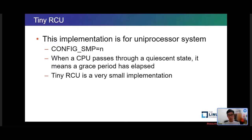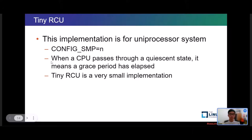Tiny RCU is also one of the current RCU implementations in the Linux kernel. To specify Tiny RCU, you can simply set CONFIG_SMP to n and rebuild it. This implementation has some features: first, when a CPU passes through a quiescent state, it means a grace period has elapsed. Second, it also provides a quite small implementation in the Linux kernel.